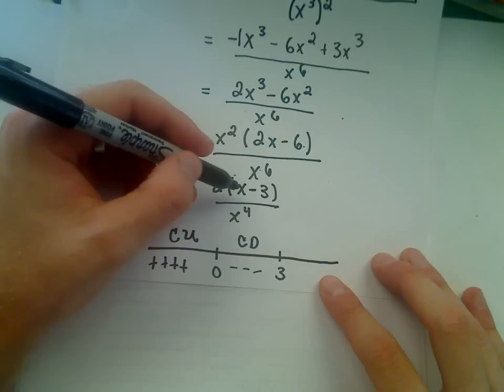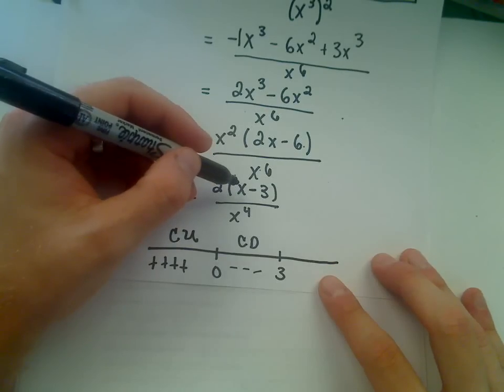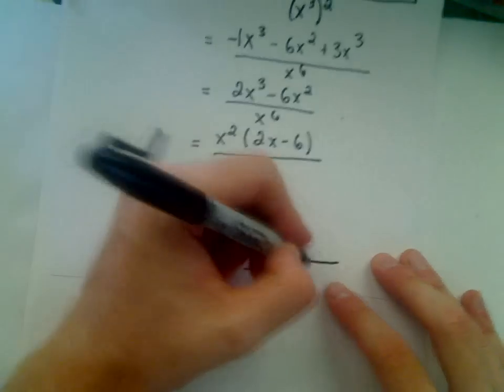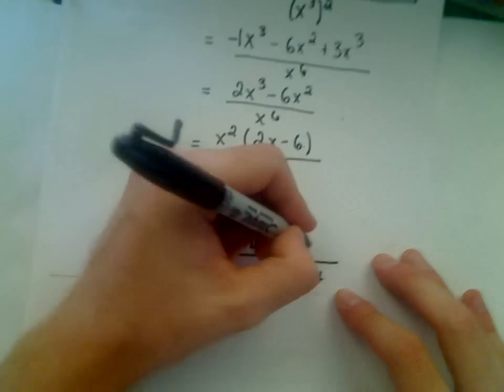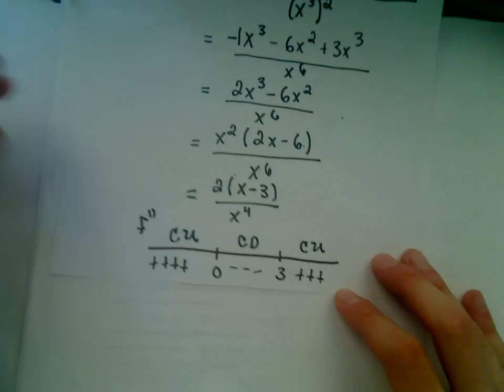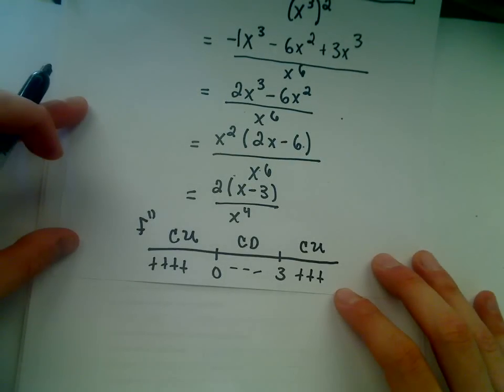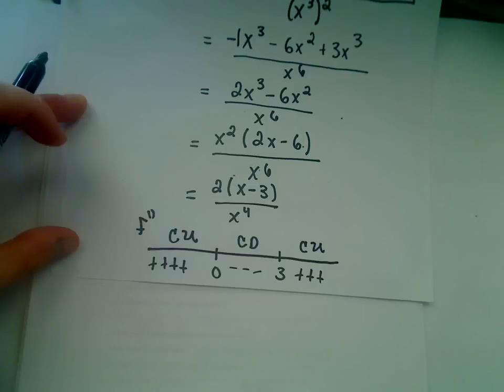Take a number bigger than 3, say 4. The numerator will be positive. The denominator is always positive. So again, we're going to get positives, and that means it's going to be concave up on that interval. Again, an inflection point is a point on the graph where the concavity changes.